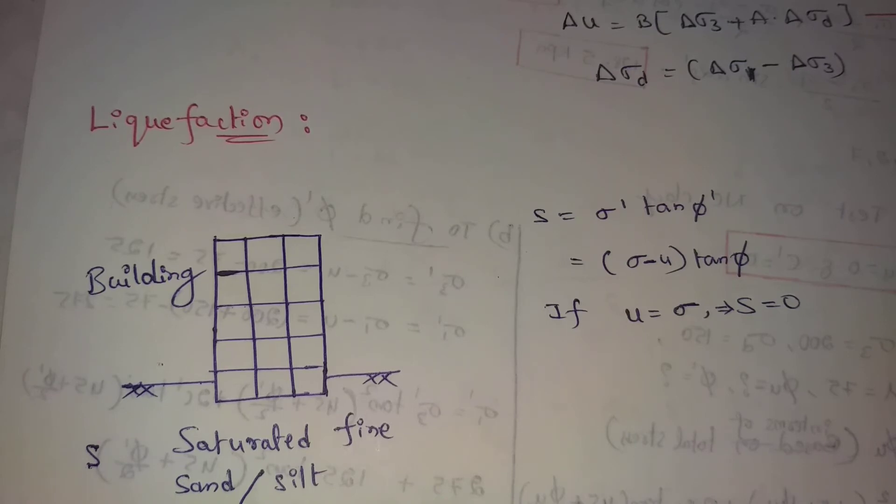So here s equals shear strength equals sigma dash tan phi dash. Sigma dash means effective stress, phi dash means angle of effective shearing resistance.